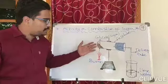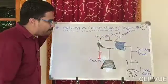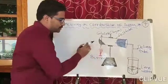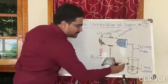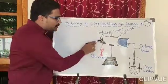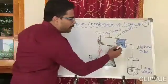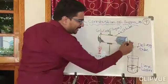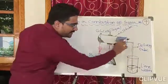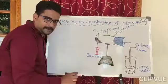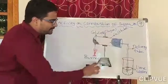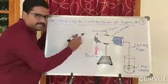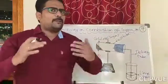Now let us understand an activity in a laboratory. Observe this diagram. The materials required for this experiment are: a test tube in which glucose or sugar is taken, a one-hole split cork, a delivery tube attached to it, and the delivery tube's other end dipped in lime water. There is also a stand — either iron or wooden — and a burner. We have to heat and burn the sugar.